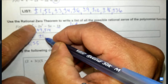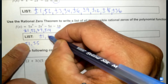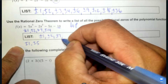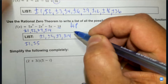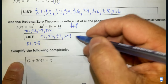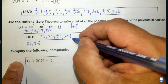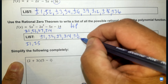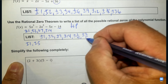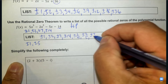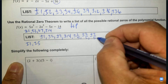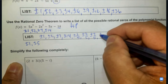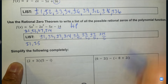We have the last number and the first number, and then we divide all combinations. So 1 divided by 1, 2 divided by 1, 7 divided by 1, 14 divided by 1. Then do the same thing with 5: 1 divided by 5, 2 divided by 5, 7 divided by 5, and 14 divided by 5. And that's the complete list.